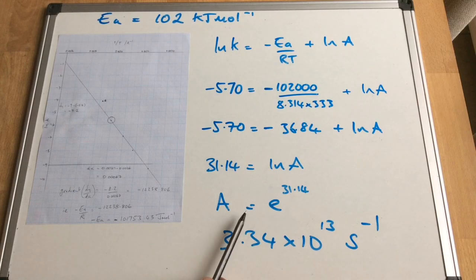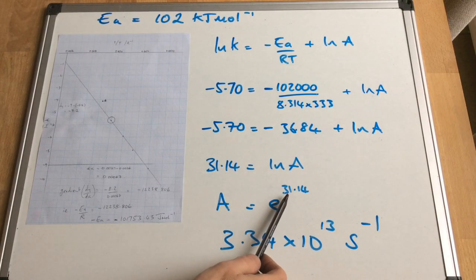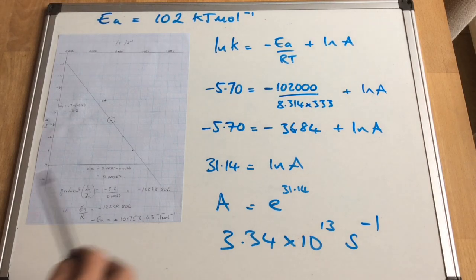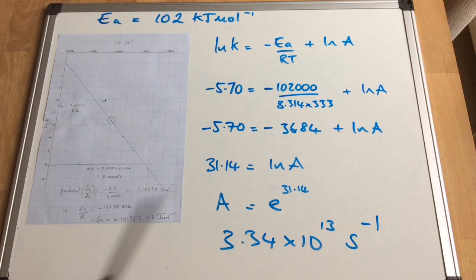So A equals e to the 31.14. And that gives me a value for A at 3.34 times 10 to the 13. And the units of A are the same as the units of k, which if you remember from the start of the question, were seconds to the minus 1.